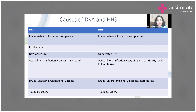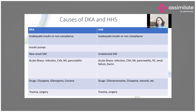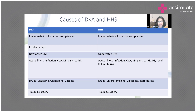Acute infections are a common precipitant, along with what we call the 'five I's' — including infection and infarction. Events like CVA, MI, acute pancreatitis, renal failure, and burns are acute stressors that can precipitate DKA or HHS. As part of treatment, we must identify and treat the underlying cause. Trauma, surgery, and certain drugs — especially antipsychotics like clozapine or olanzapine — can also precipitate these conditions.